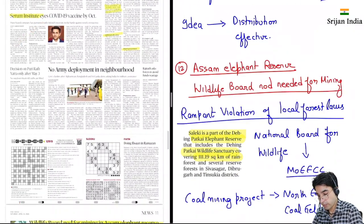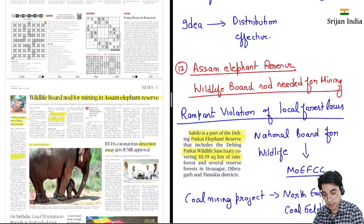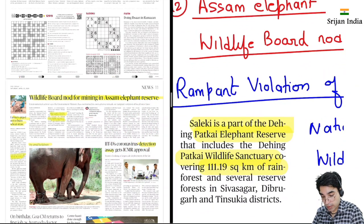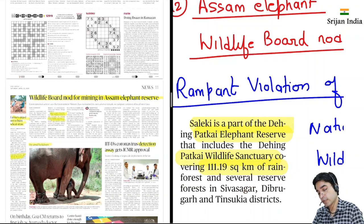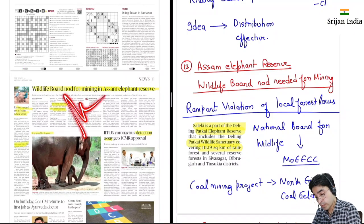Serum Institute ne kaha hai vaccine develop kar rahe hain. Yahan pe Wildlife Board ka jo decision hai uske sawaal uth rahe hain — yahan rampant violation hai local forest laws ka, kyunki yeh permission de rahe hain mining ke liye aur isse forest ka loss hota hai. Yeh area hai Dehing Patkai elephant reserve ka part — Dehing Patkai wildlife sanctuary aati hai, 111 square kilometer ka rain forest hai. Several reserves — Shiv Sagar, Dibrugarh aur Tinsukia district ke yahan aate hain. National Board of Wildlife under MoEFCC — Ministry of Environment, Forest and Climate Change — ne coal mining project ke liye northeast coalfields ko permission di hai, toh is pe questions uth rahe hain.